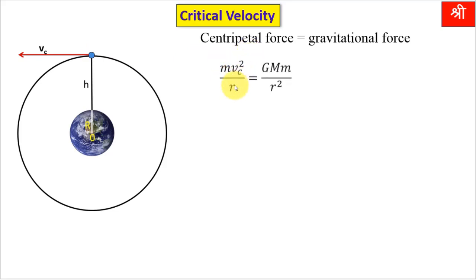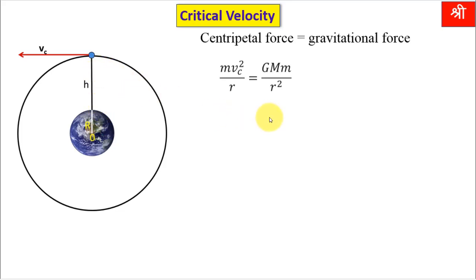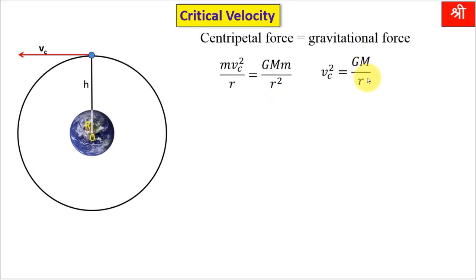Therefore we can write: m·Vc²/r = G·M·m/r². This is the formula for centripetal force on the left, and gravitational force on the right. As the satellite is orbiting with velocity Vc, we have written Vc² here. Capital M is the mass of the Earth, small m is the mass of the satellite, and r is the radius of circular motion, which is also the distance between the centers of the Earth and the satellite. Here one r gets cancelled.